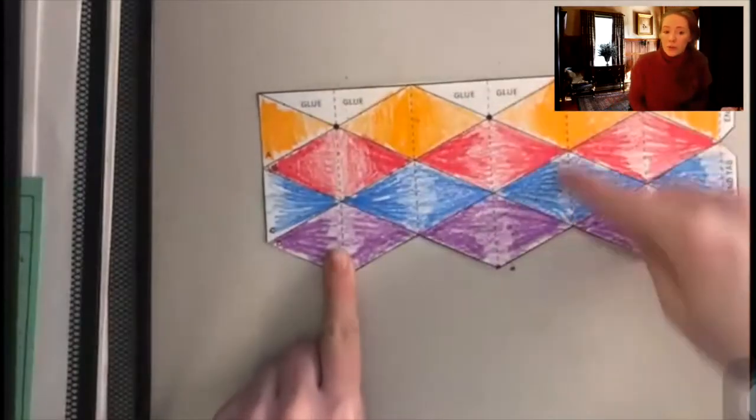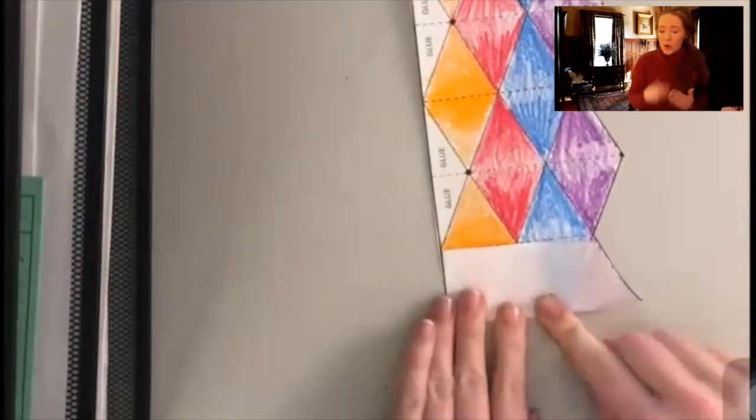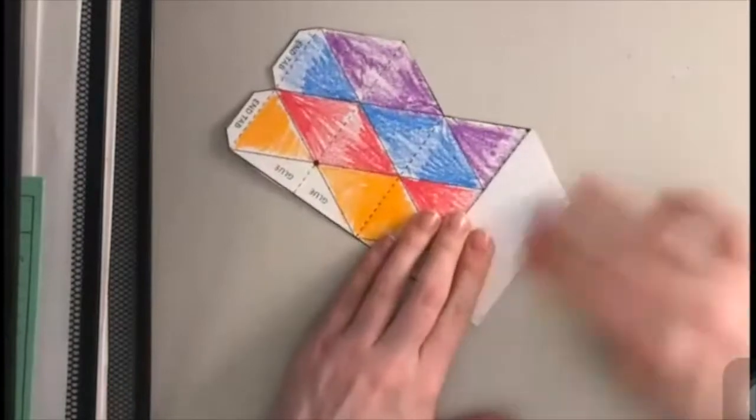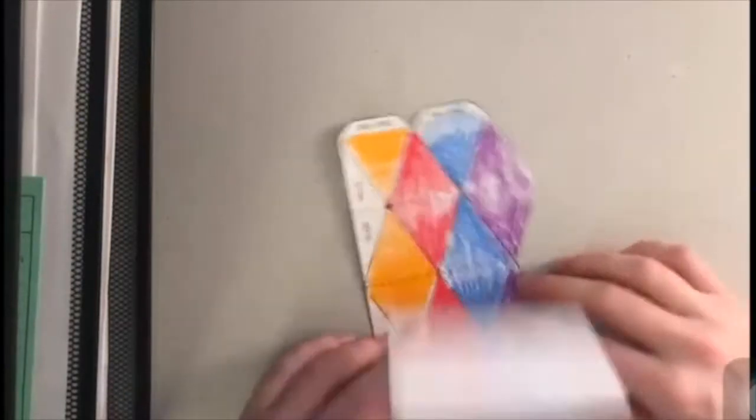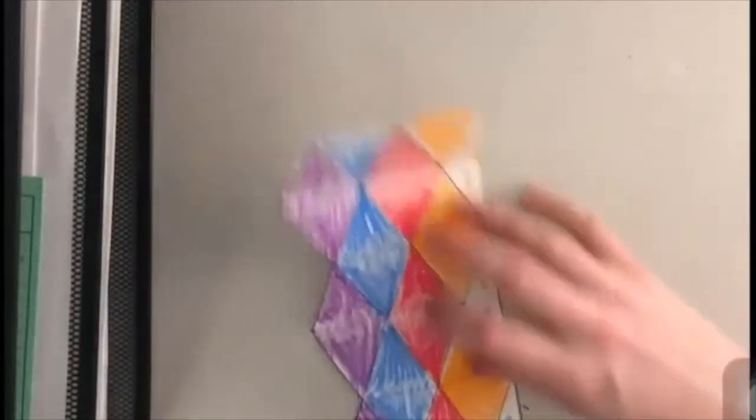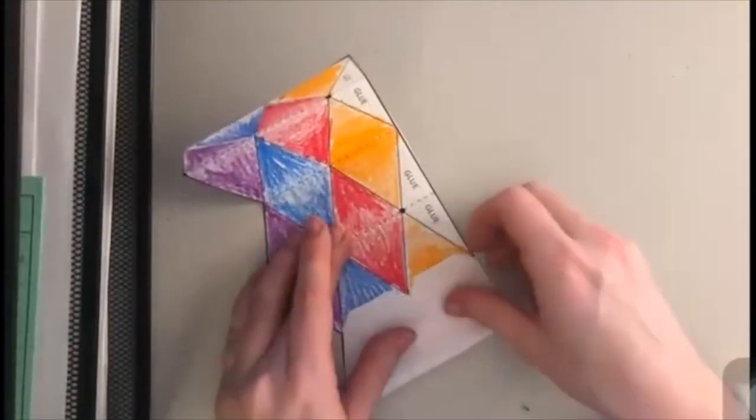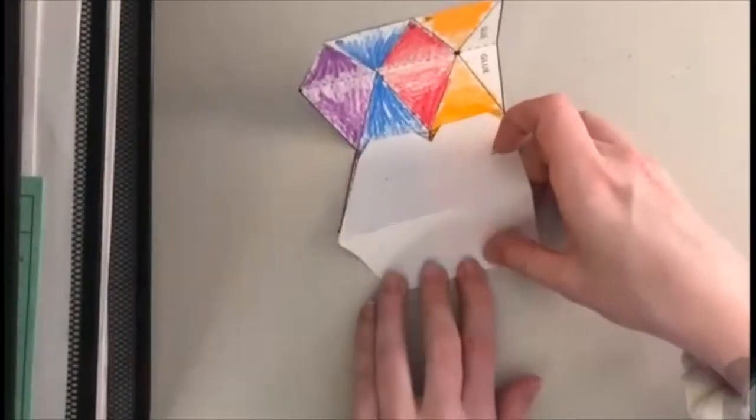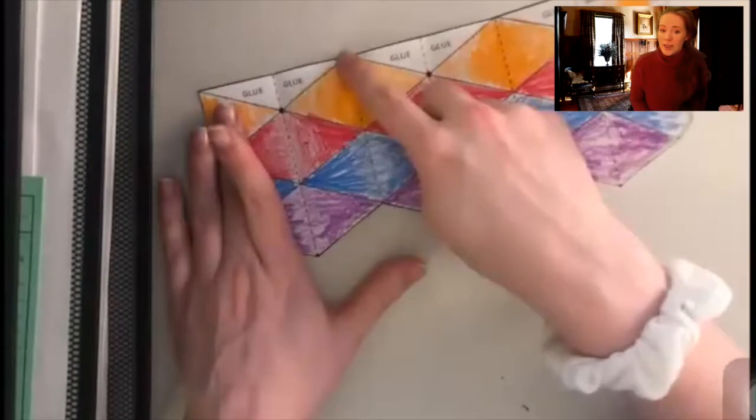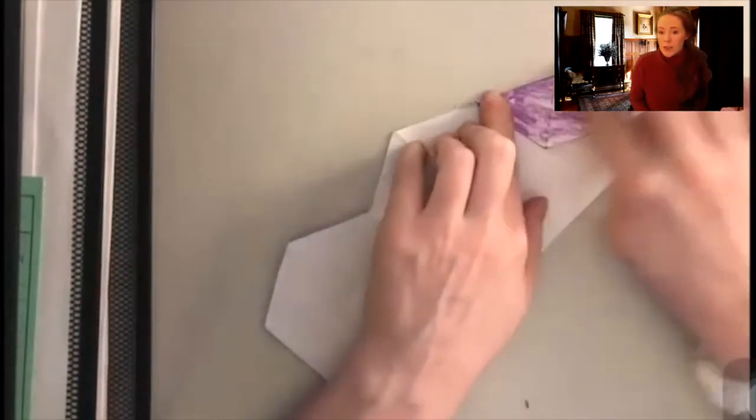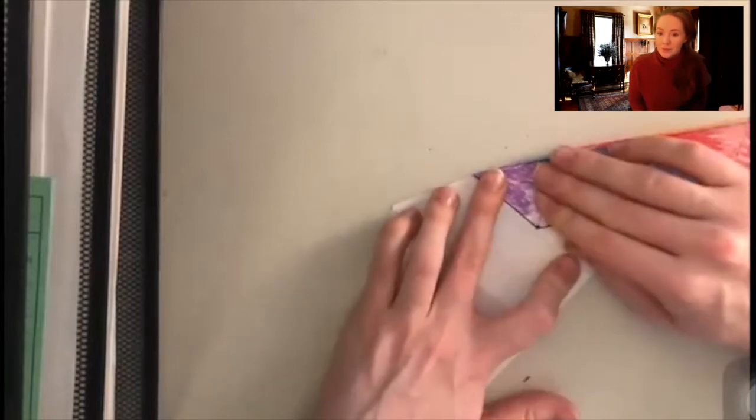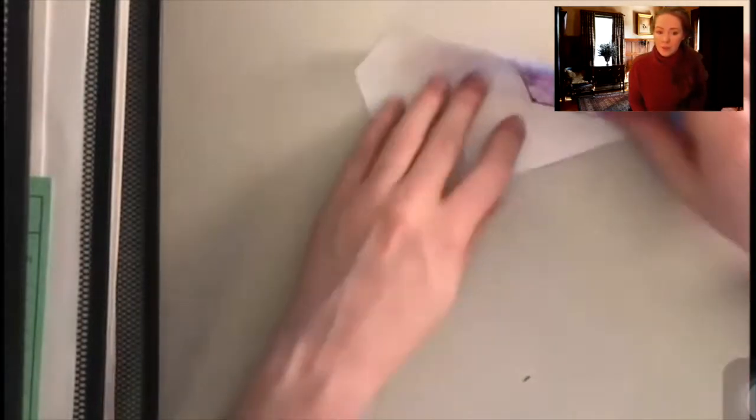Once you have colored, you're going to just cut out that template. We're going to start with the vertical lines here and you want to fold those just over themselves towards themselves. So you're basically making those concave folds.